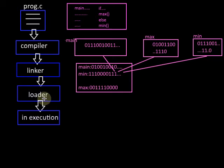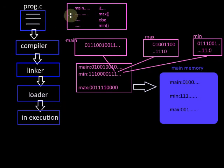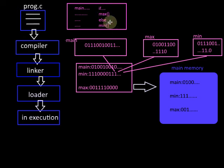Next comes the task of the loader. The loader will load this object code into main memory for execution. Hence all modules including min and max are loaded into main memory and the program begins executing. When the if statement is reached and the if condition is evaluated to be true, the max function is executed.